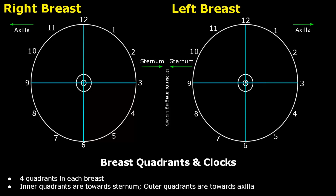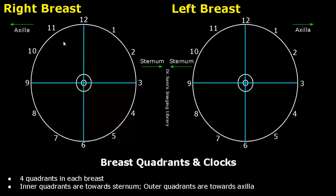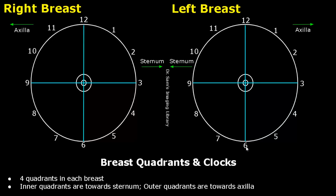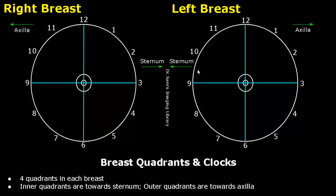The nipple is taken as the center of the clock and the numbers are assigned in a similar fashion to that of a clock. The 12 o'clock position is towards the superior margin of the breast. For the right breast, the 3 o'clock position is at the left margin towards the sternum, while for the left breast it is towards the axilla. The 6 o'clock position is towards the inferior margin, and the 9 o'clock position is towards the axilla in the right breast and towards the sternum in the left breast.